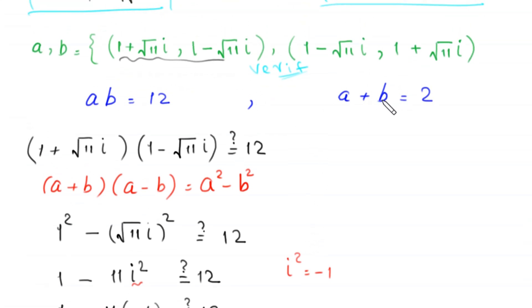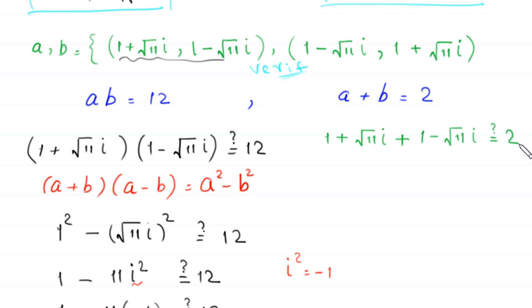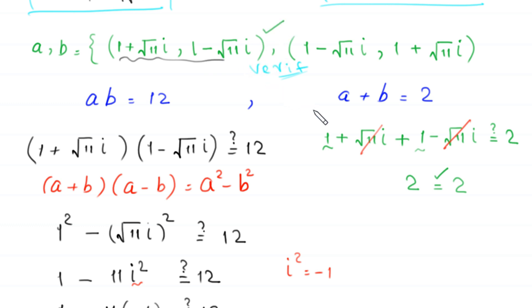Now we check this pair in the second equation. In place of a we write 1 plus root 11 i, plus in place of b we write 1 minus root 11 i, which should equal 2. The negative root 11 i and positive root 11 i cancel, and 1 plus 1 equals 2, so 2 equals 2. Left hand side equals right hand side. This means the pair (1 plus root 11 i, 1 minus root 11 i) is a valid solution. In the same way, the pair (1 minus root 11 i, 1 plus root 11 i) is also a valid solution. So we have two pairs of solutions for this system of equations.